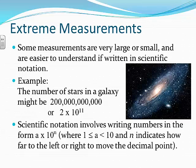Some measurements are very large or small and are easier to understand if written in scientific notation. For example, the number of stars in a galaxy might be 200 billion — a hard number to wrap our minds around — so in scientific notation we could rewrite this as 2 times 10 to the 11th. Scientific notation involves writing numbers in the form of something times 10 to a power.